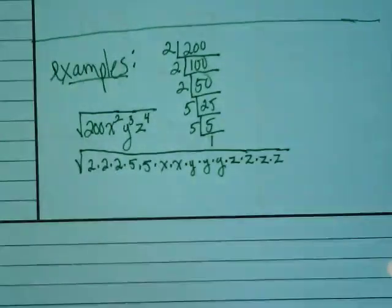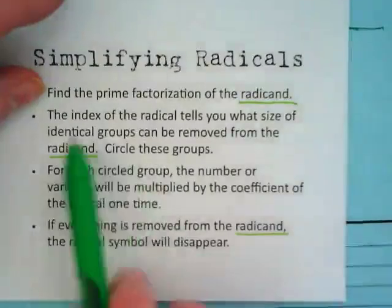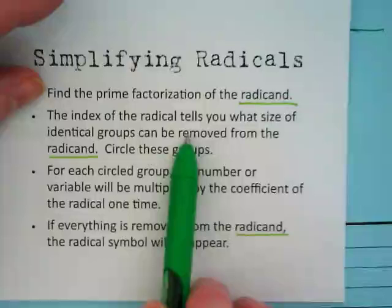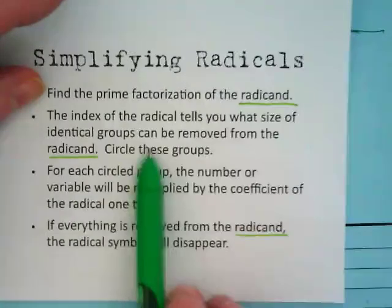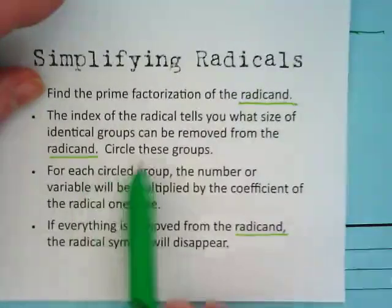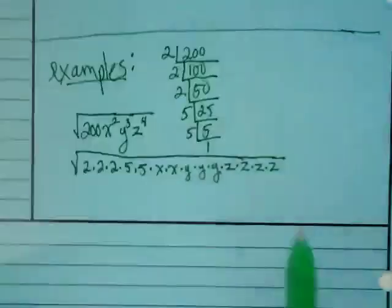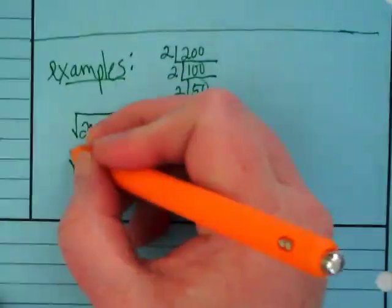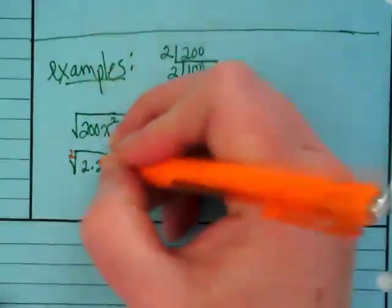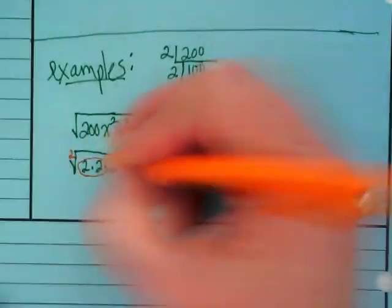Okay, I'd like you guys to look at the longest direction on this that you just wrote down. The index of the radical tells you what size of identical groups can be removed from the radicand. Circle these groups. Well, it's invisible. What do we know is here? That means I can circle groups of two that I find.